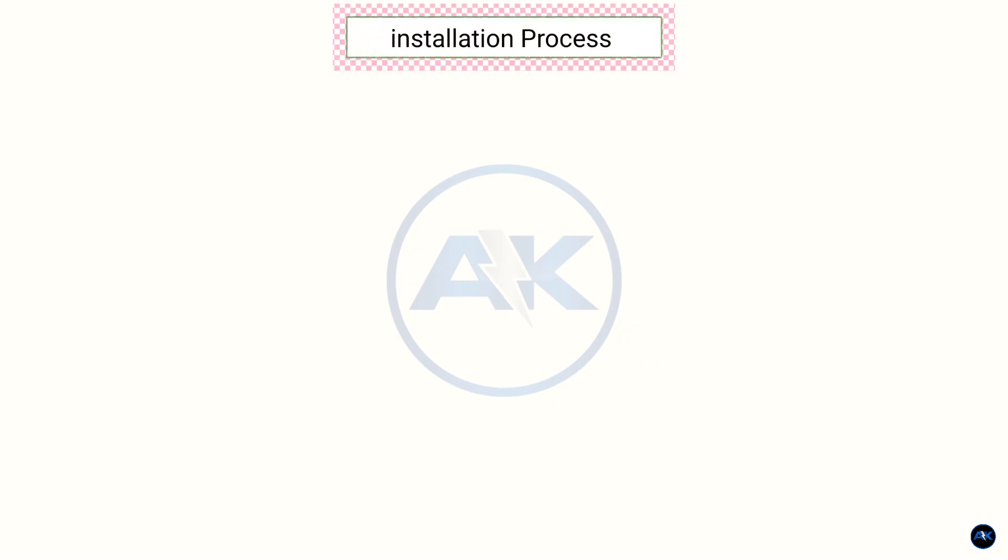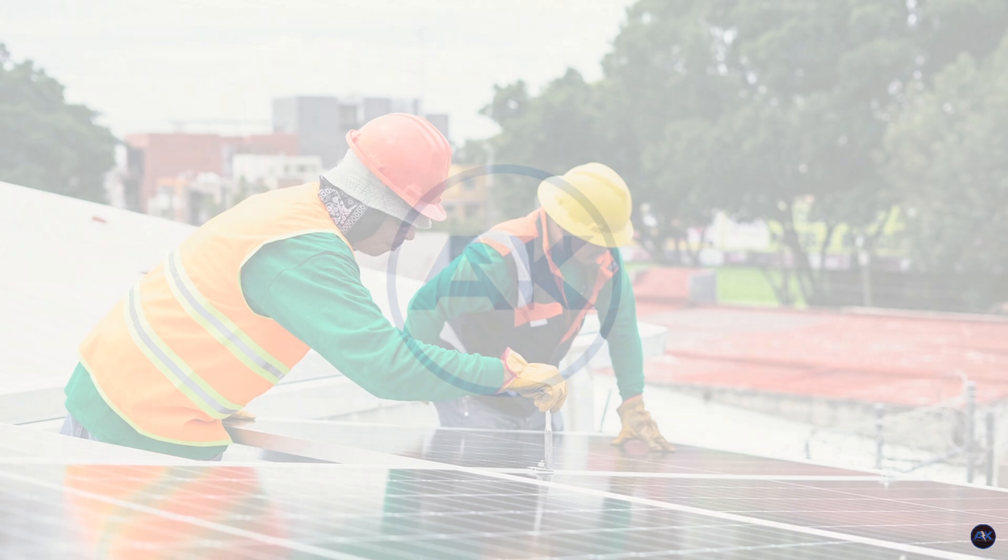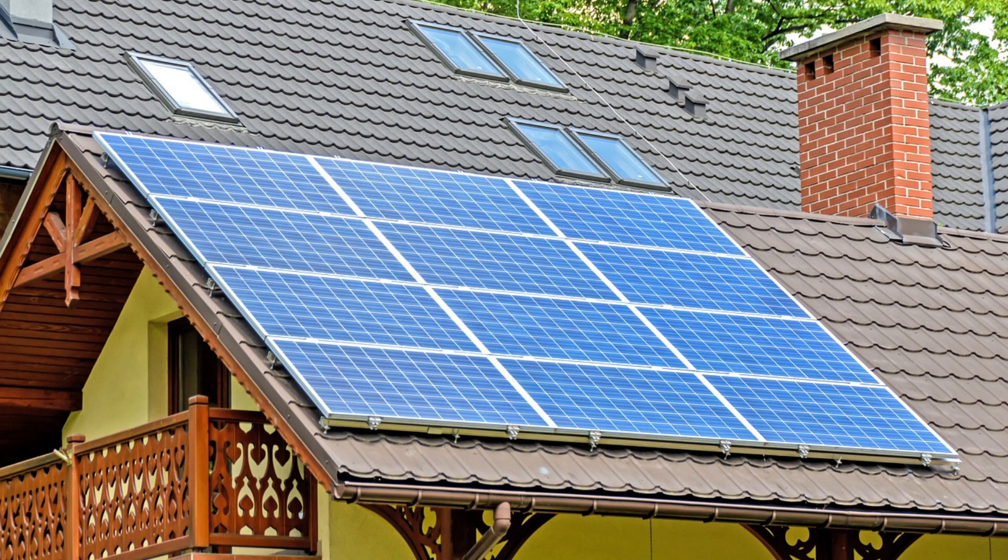Now, let's get into the installation process. Section 1: Panel installation and string sizing connections. First, the mounting structure is installed, ensuring it's securely attached and aligned correctly. Then, the solar panels are mounted onto the structure.